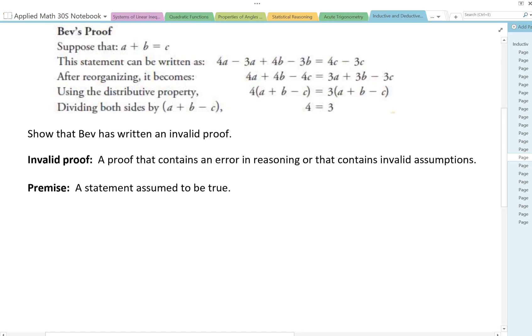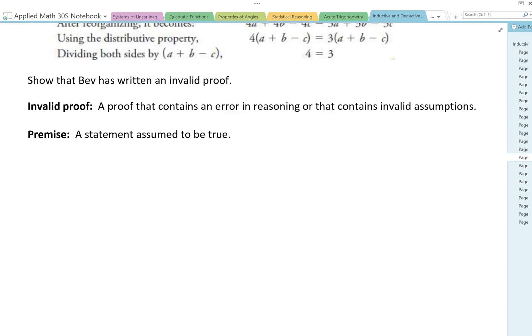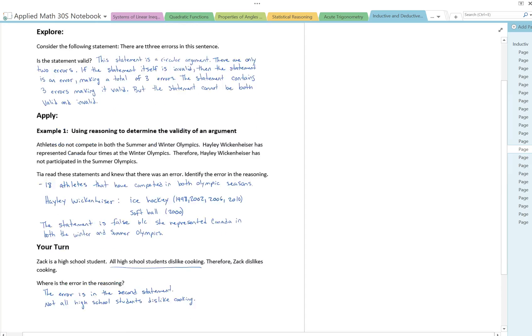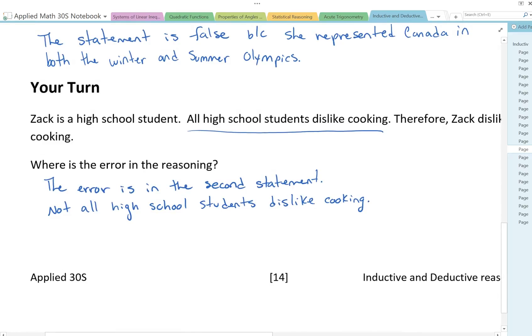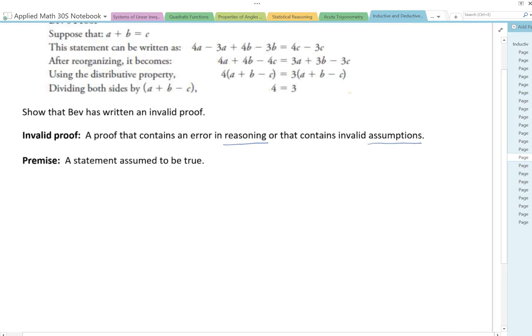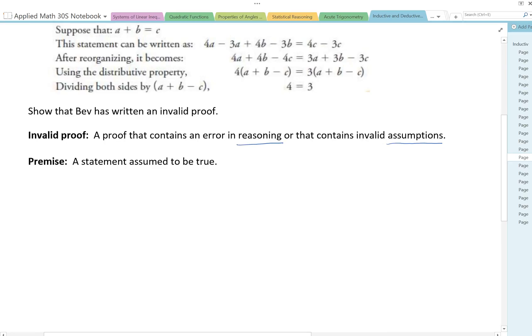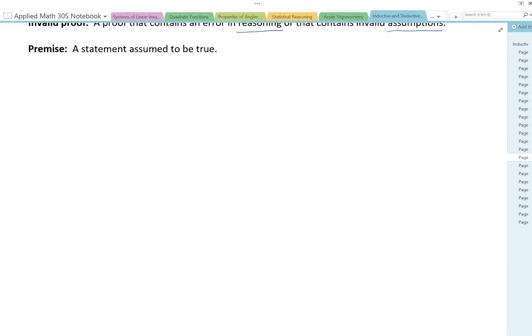An invalid proof is a proof that contains an error in reasoning or that contains invalid assumptions. Very much like the example at the bottom, all high school students dislike cooking. That's an invalid assumption. A premise is a statement that is assumed to be true. We're going to separate this into proof and comment. Here's the proof on this side and here's the comment, which will be an explanation about what we're doing. The proof says that a plus b is equal to c. A variable can be represented by any number, so Bev's premise is valid.